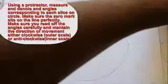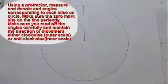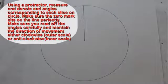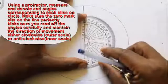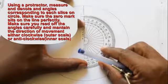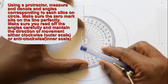Using a protractor, measure and denote the angles corresponding to each slice on the circle.